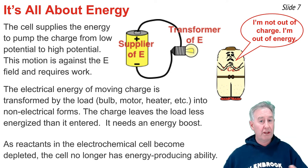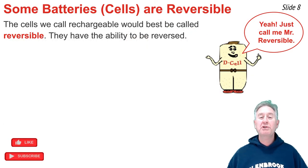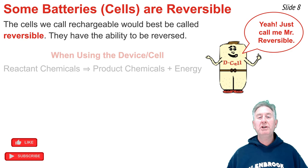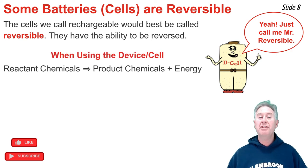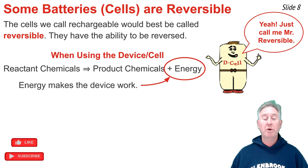And inside that little canister that we call a cell or battery are a collection of chemicals that are undergoing an exothermic reaction to produce the energy to give the charge its energy boost. But over the course of time, those reactants become used up and depleted, and the energy-producing ability of the electrochemical cell is diminished, at which point we either need to throw it away, recycle it, or do something to restore its energy-producing ability. Not every battery is rechargeable, but those that are would best be called reversible, because they can be reversed.